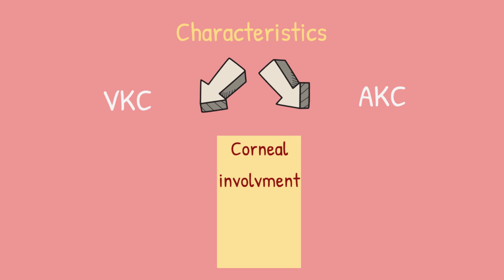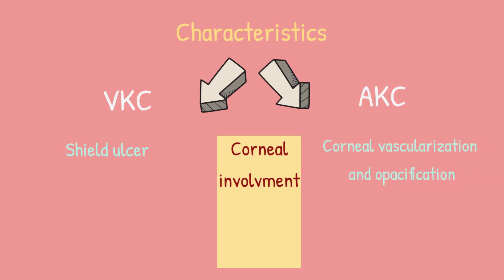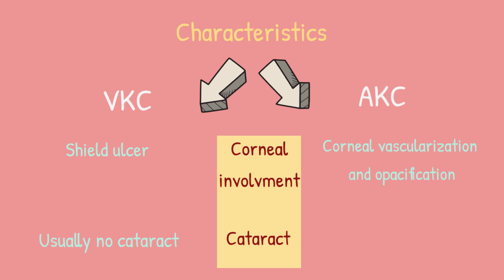Corneal involvement in vernal keratoconjunctivitis includes shield ulcer and keratoconus. On the other hand, corneal vascularization and opacification can occur in atopic keratoconjunctivitis, which are associated with keratoconus and herpes simplex virus. Usually there is no cataract with vernal keratoconjunctivitis unless corticosteroid-induced, whereas posterior or anterior subcapsular cataract occurs with atopic keratoconjunctivitis.